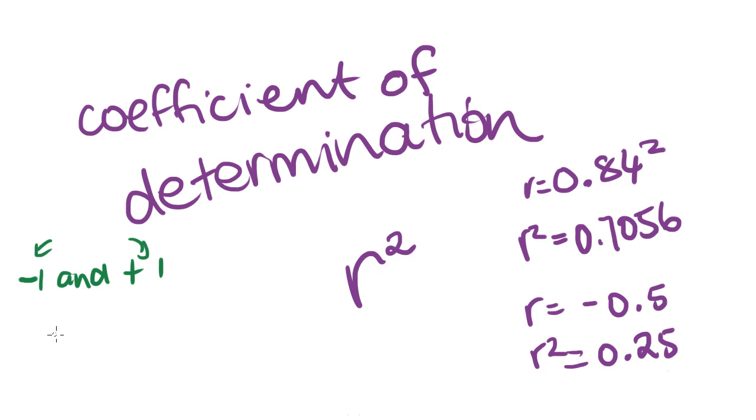And it's always going to fall between 0 and positive 1, because we had these decimals between 0 and 1 for these, and now we've just made them both positive. So your r squared value, your coefficient of determination, will always be between 0 and 1.